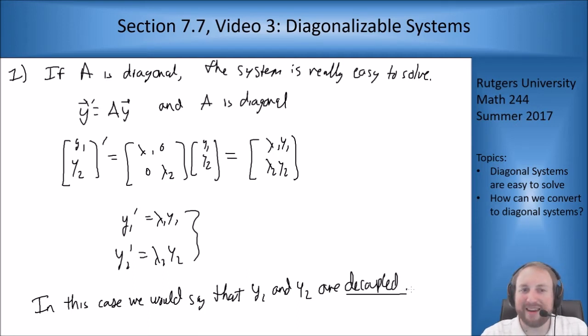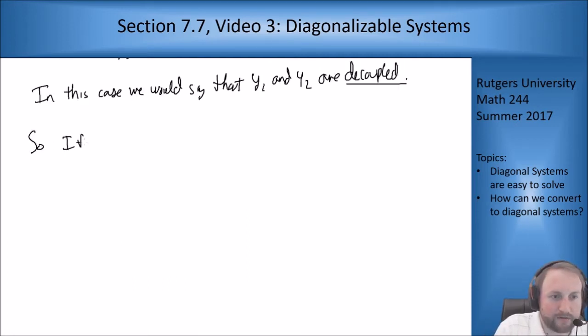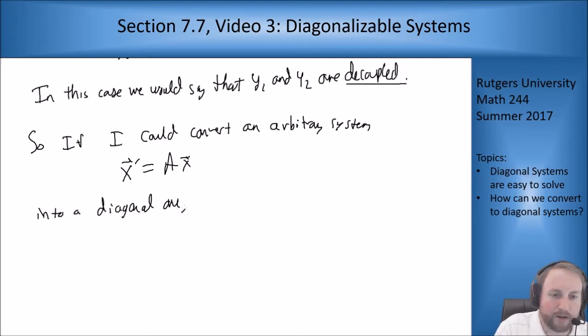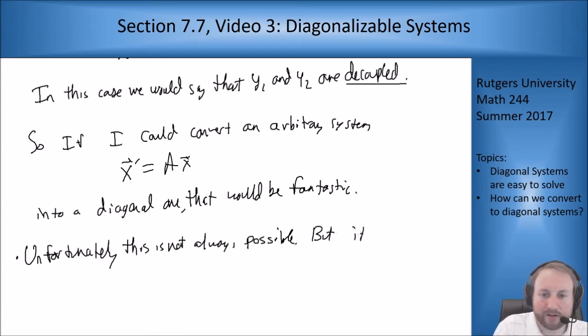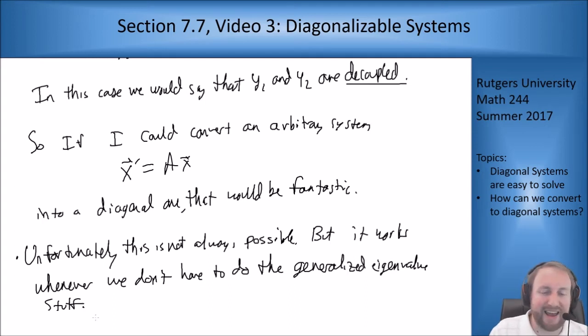So what if we could make a system diagonal? If I could convert an arbitrary system x prime equals Ax into a diagonal one, that would be fantastic. Because if I can convert it, I can then solve the diagonalized one and then back it up and get my value x from that. Unfortunately, this is not always possible. But it works whenever we don't have to do the generalized eigenvalue stuff. That is, when I have n eigenvectors.